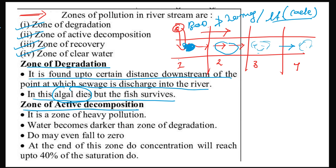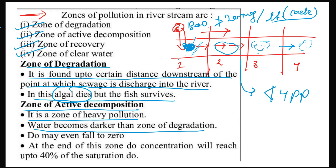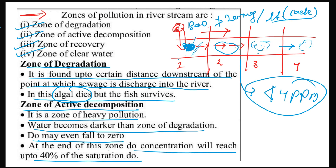The zone of active decomposition is the zone of heavy pollution. Water becomes darker than in the zone of degradation. In this zone, the dissolved oxygen (DO) may fall even to zero. At the end of this zone, DO concentration will reach up to 40% of saturation DO.